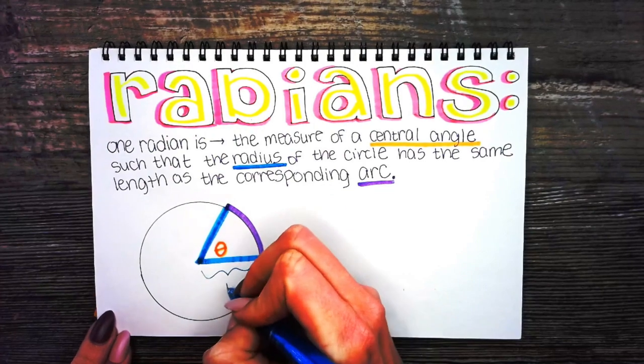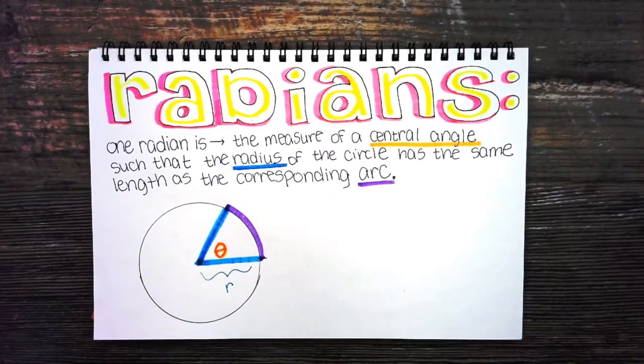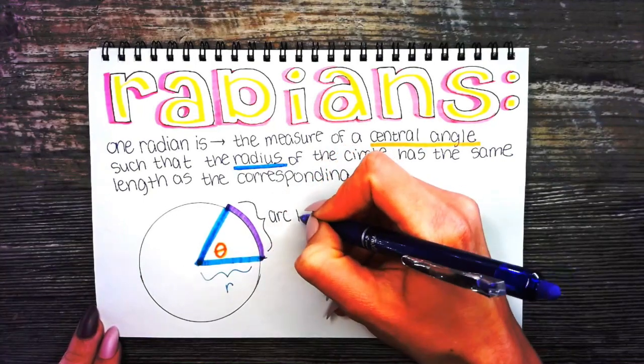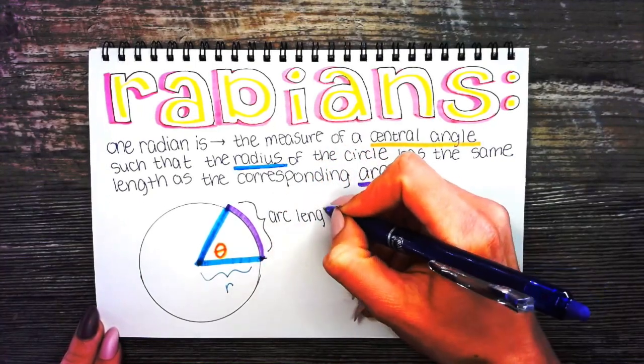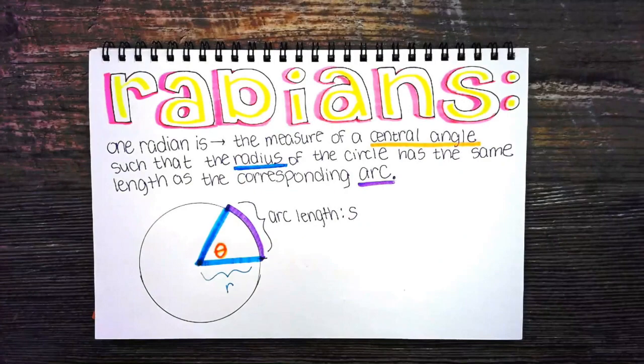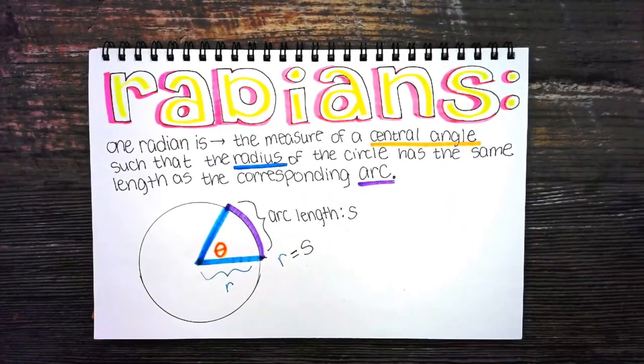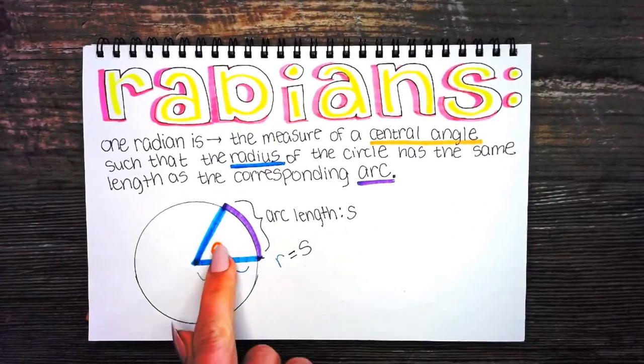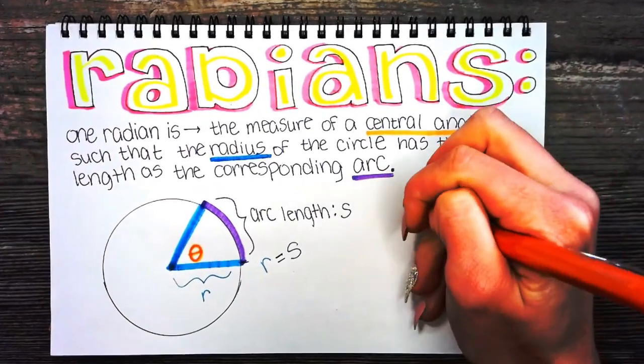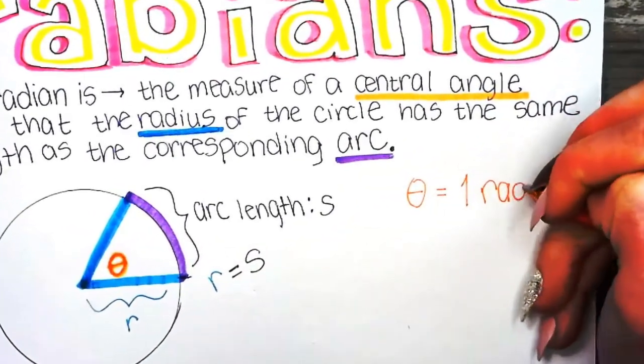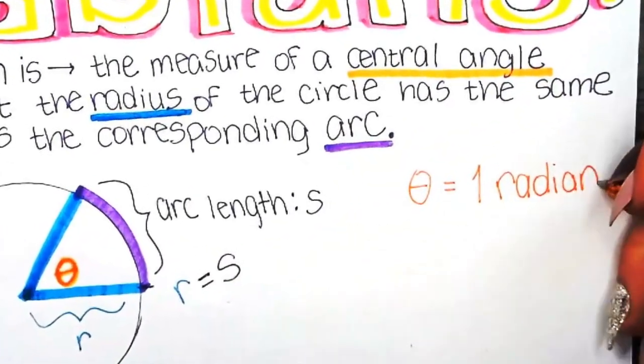Since the length of this radius is equivalent to the length of the arc, and for arc length we use the letter s. Since r, the radius length, and s, the arc length, are equal, they must form an angle theta, and theta has a measure of one radian.